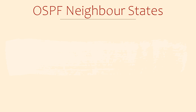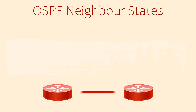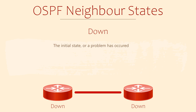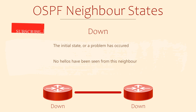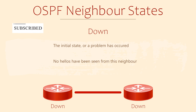When a router forms an adjacency with another router, it goes through several states. The routers progress through these states as they learn more about each other. The first state is down. This means that an OSPF-enabled link is up, but no hello messages have been received by a neighbour yet. This is basically where the whole process starts.